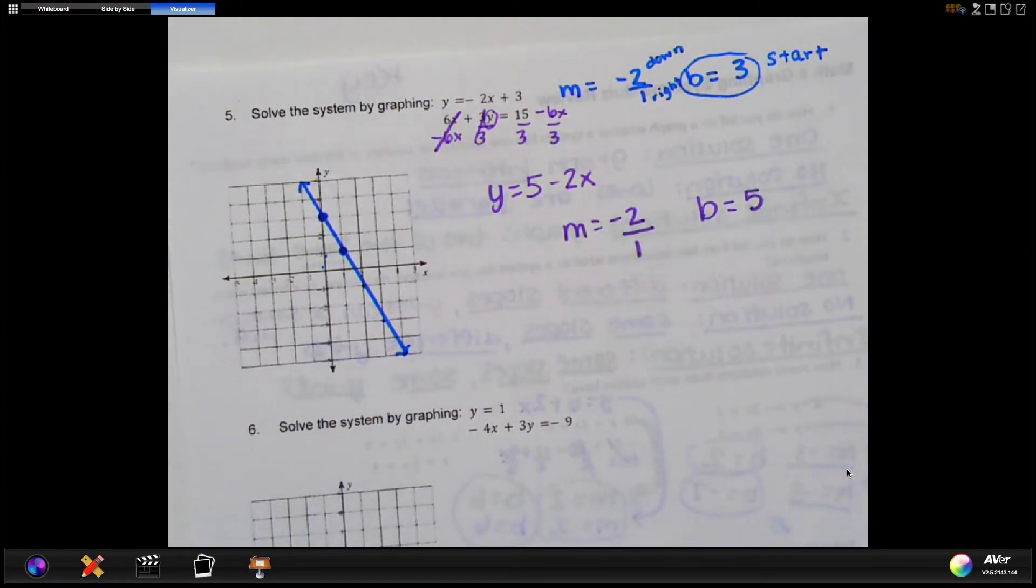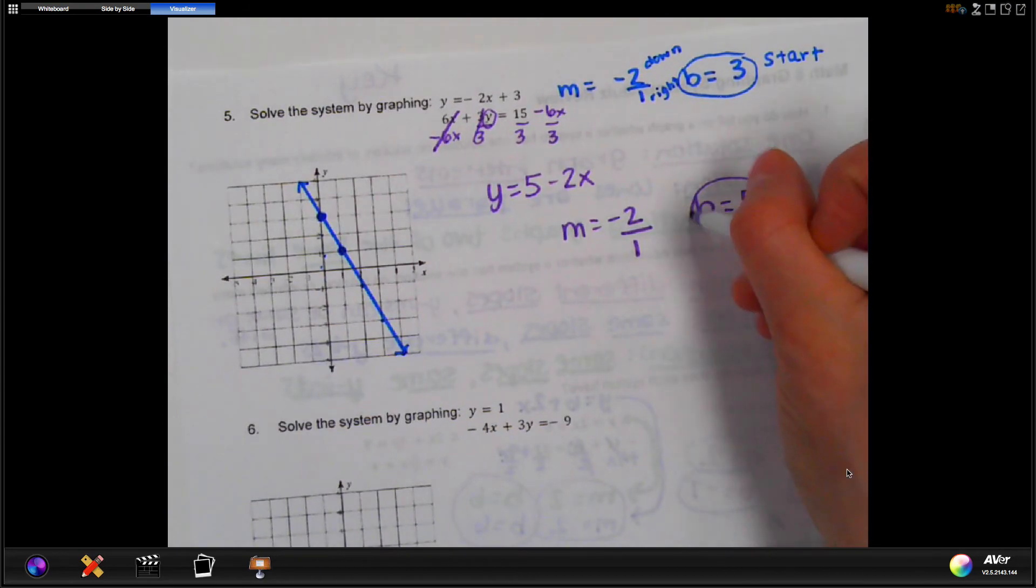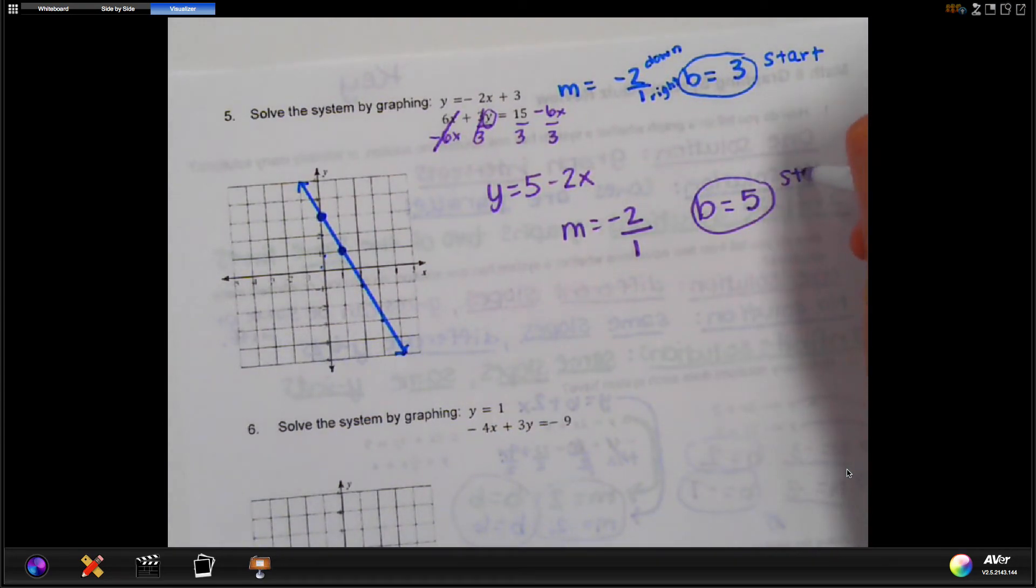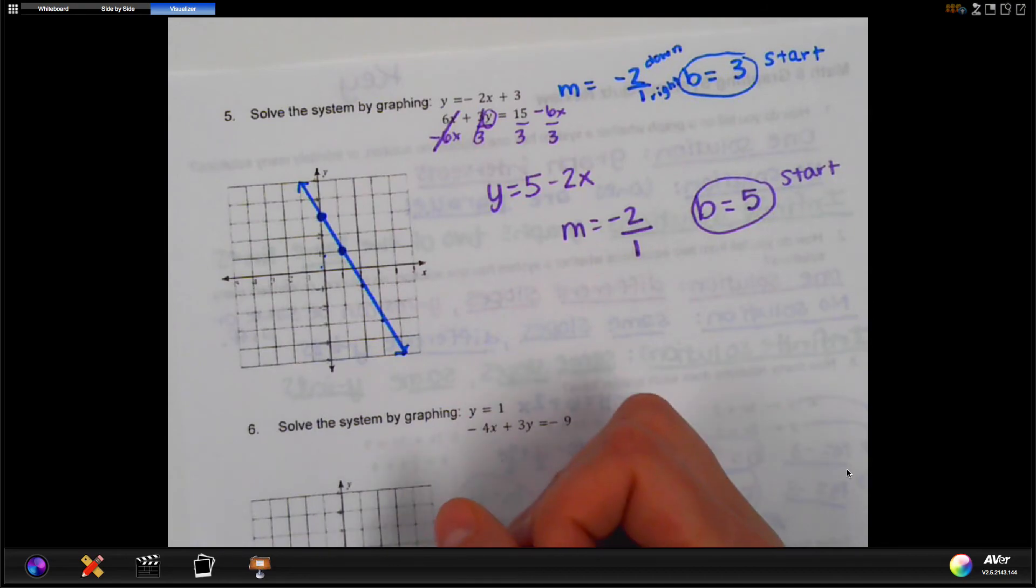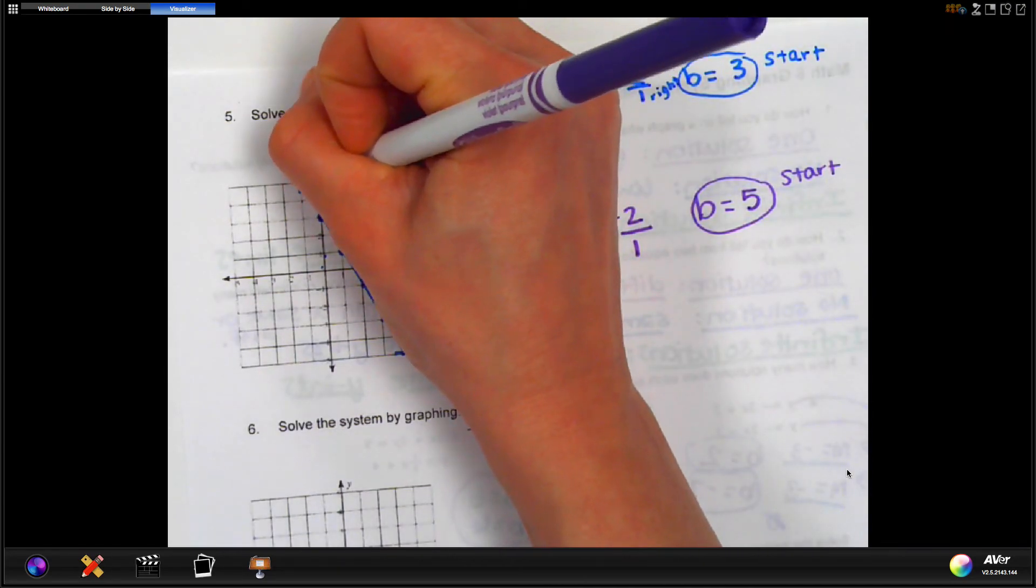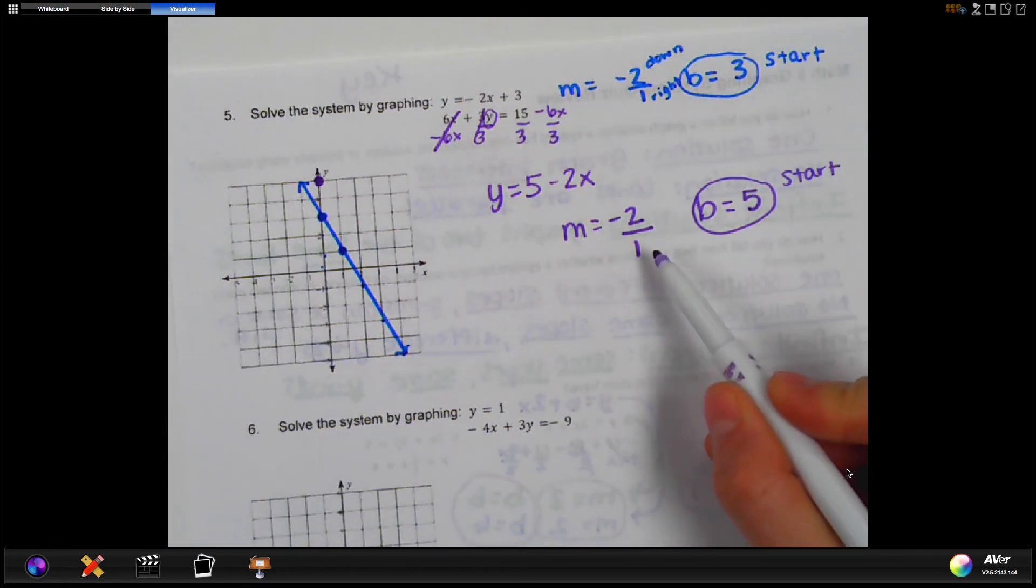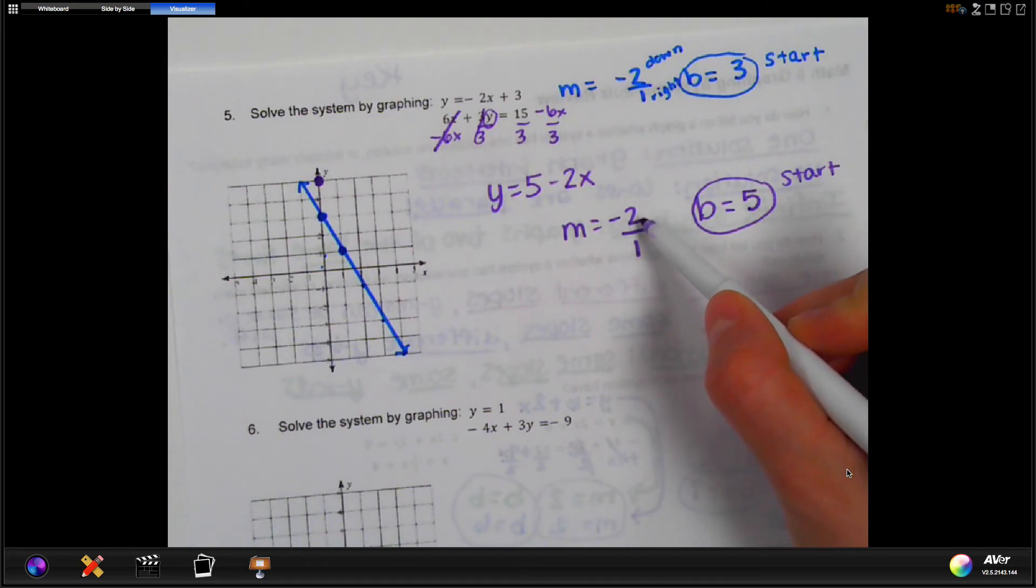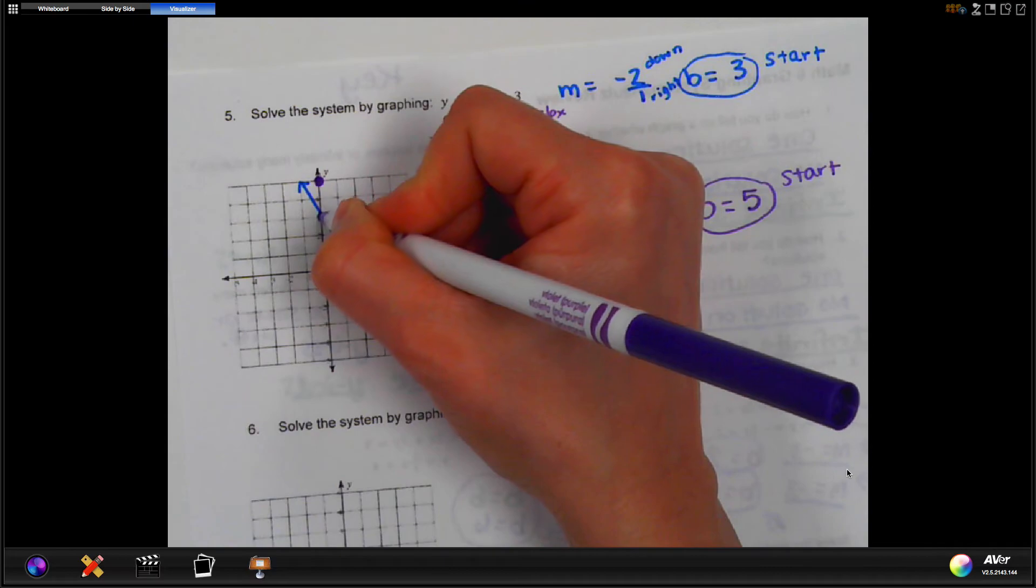Okay, now we can graph. We will again start with our b. Okay, so we're going to start at positive 5 this time. So on the y-axis up to positive 5, we want to make a dot. And then we're going to use our slope for our rise and our run. So negative 2 means down 2, and positive 1 means right 1. So down 2, right 1.